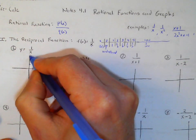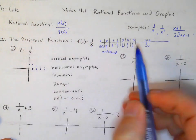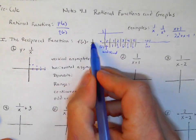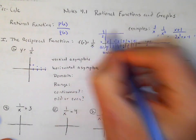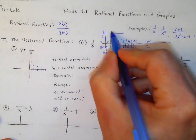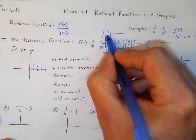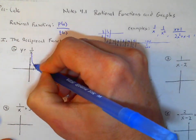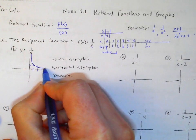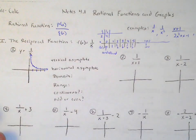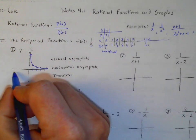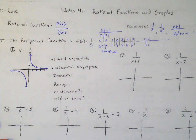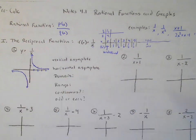So at zero, it's undefined. What if I put 1/2 in there? 1 divided by 1/2 is 2, so x=1/2 is up at y=2. What about 1/4? 1 divided by 1/4 would be 4. So our graph looks like this — and it would be the same thing with negative numbers. That's what this reciprocal function 1 over x looks like.